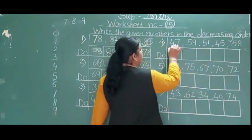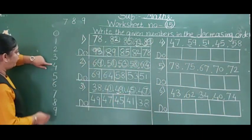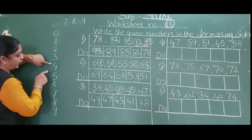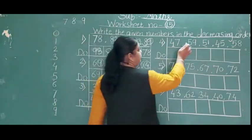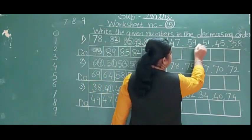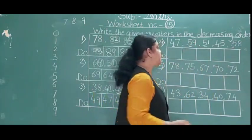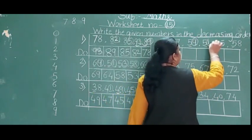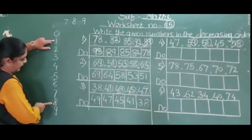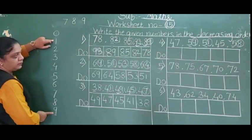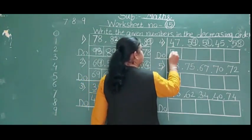First digits: 4 and 5. 4 is above and 5 is below. Below numbers are big, so 5 comes first. The 5-group: 59, 51 and 58. Second digits: 9, 1 and 8. Which is below? 9 is below, so 59 is the bigger number and comes first.